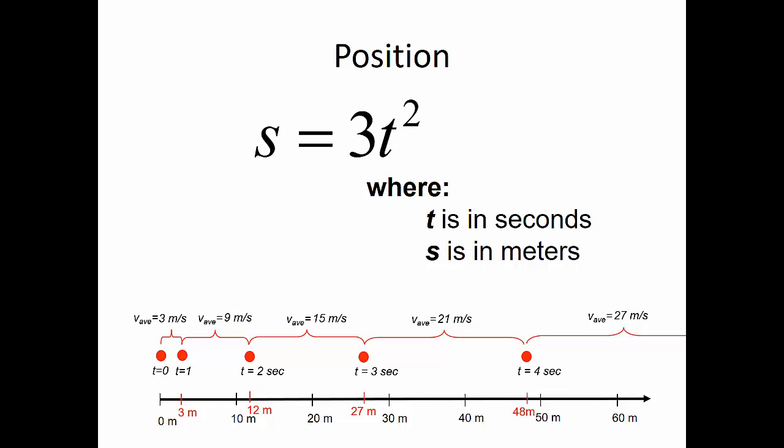If we examine the pattern here, we go from 3 meters per second to 9 meters per second — a difference of 6 meters per second. From 9 to 15 is another 6 meters per second. From 15 to 21 is 6 meters per second. From 21 to 27 is 6 meters per second. So my velocity is changing at a constant rate of 6 meters per second per second — this is my acceleration. I'm accelerating, meaning my velocity is increasing at 6 meters per second per second.